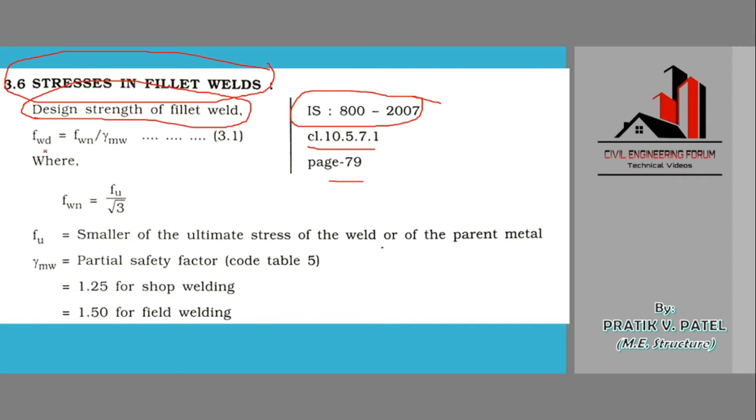Now the formula given here is fwd, that is design strength of fillet weld, is equal to fwn upon gamma mw, where fwn is the nominal strength of fillet weld, fwd is design strength of fillet weld, and gamma mw is partial safety factor.